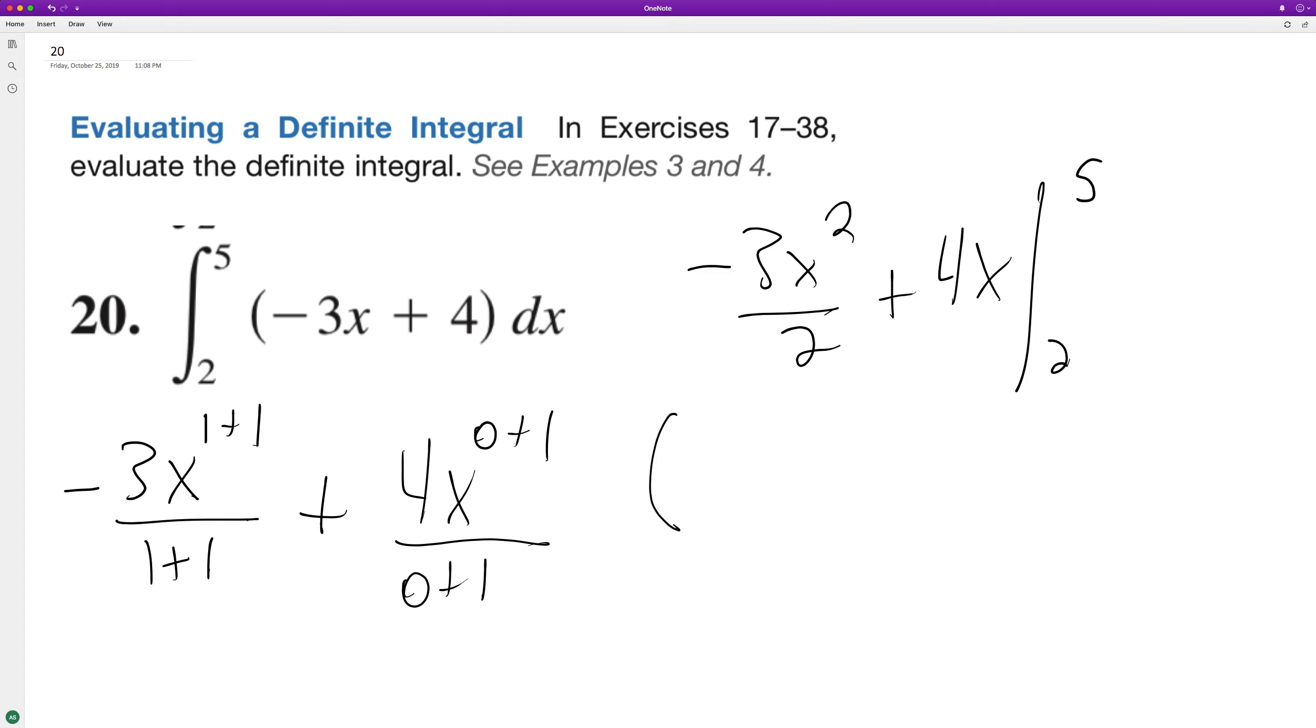All right. So integrating this, we get negative three. So that's negative 75 over two, cause that's 25 times negative three over two plus four times five is 20 minus four times that's negative 12 over two. So that's negative six plus eight.